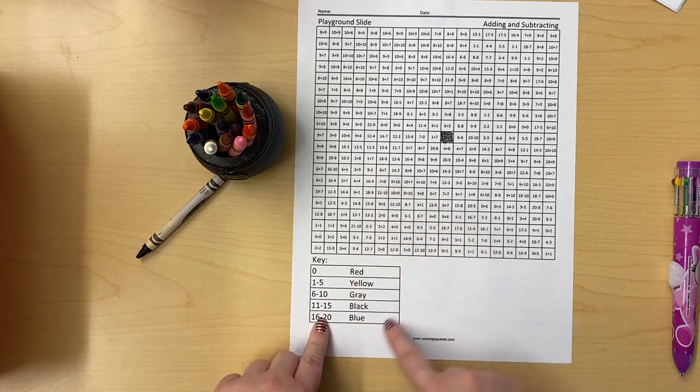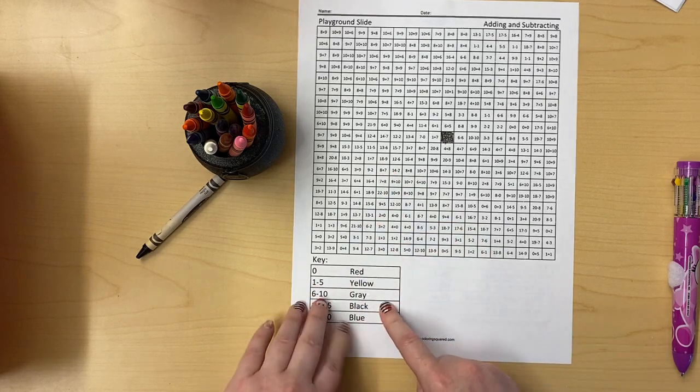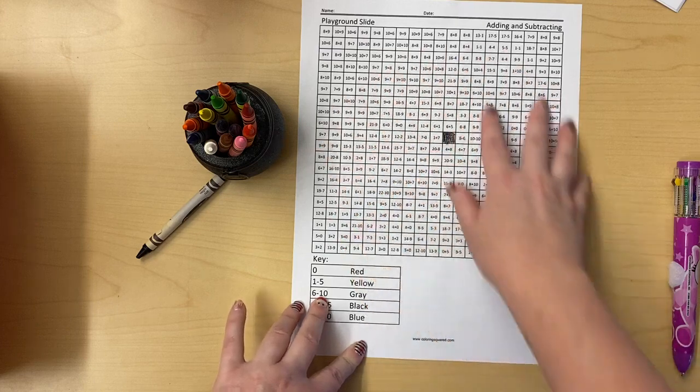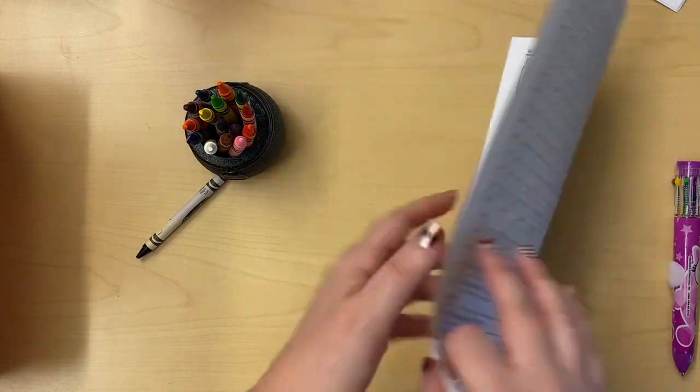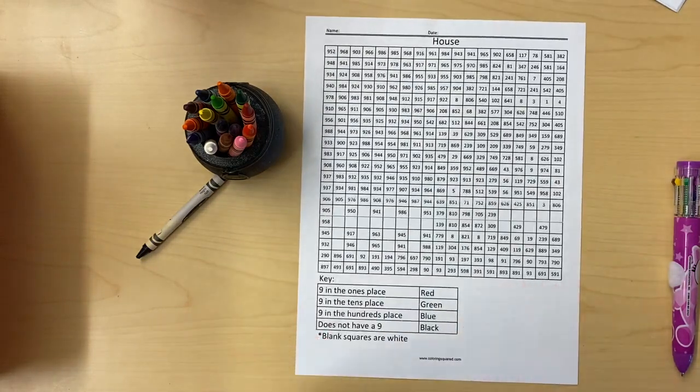So whatever the answer is, it's gonna tell you what color to color that square. And when you're finished, you'll have the whole picture filled out and it will show you whatever the object at the top is. It's a lot of fun. You can also flip on the back and do the other side as well. Have fun!